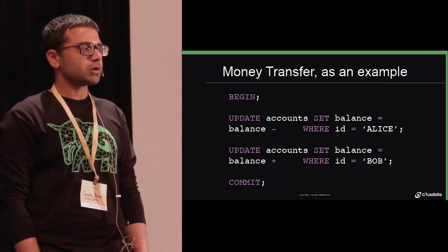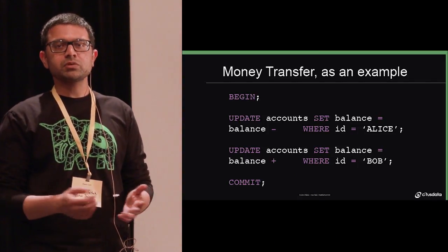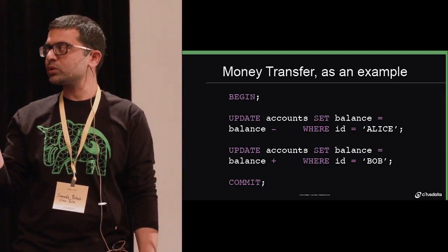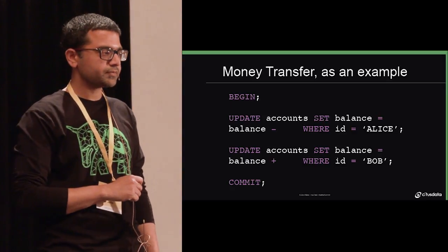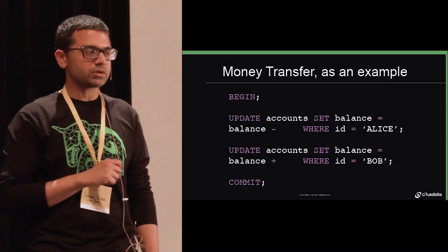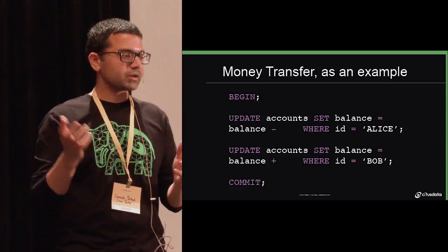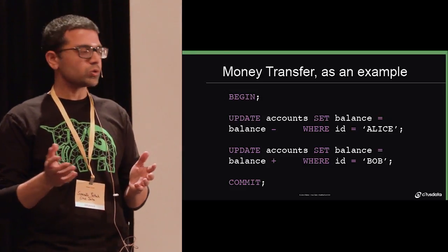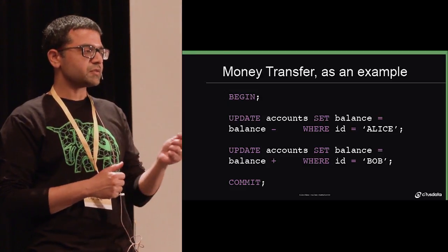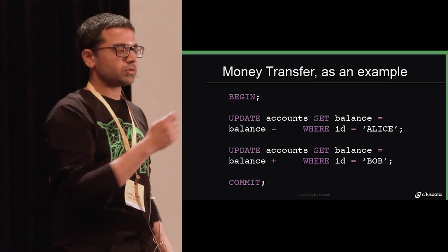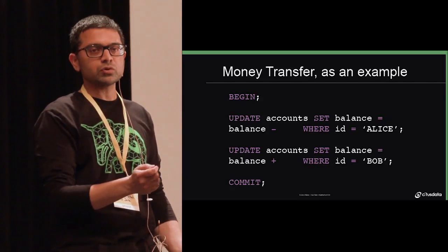Let's use the canonical money transfer example. So in this case, I'm transferring money between two accounts. I want to make sure this happens atomically in the transaction. And then let's say I'm a big bank, right? So I can't fit all the data onto one node. In this case, we shard by account ID. And so Alice and Bob's account actually live on different nodes.